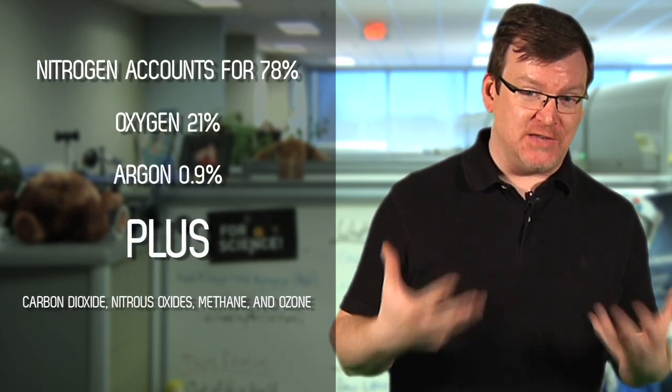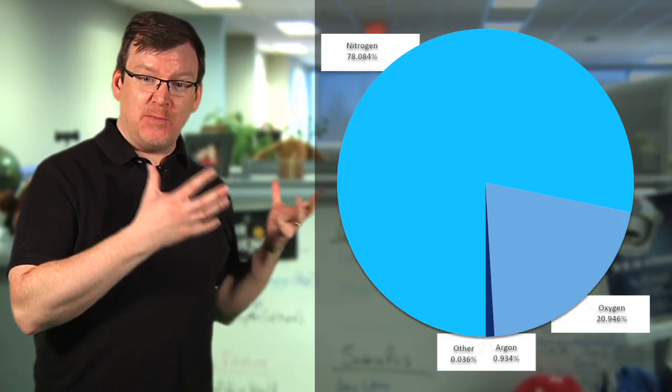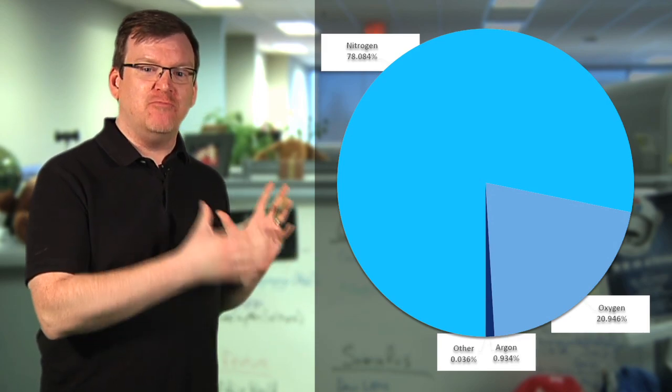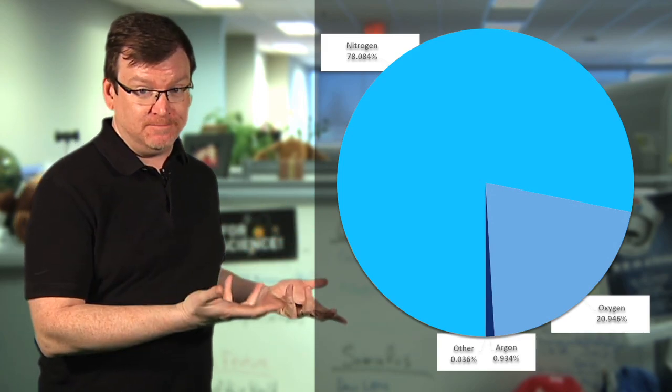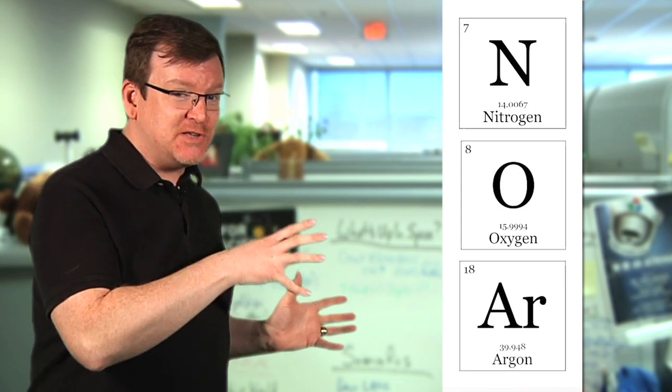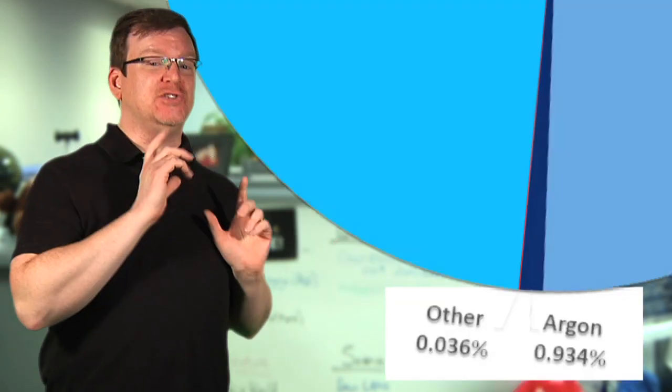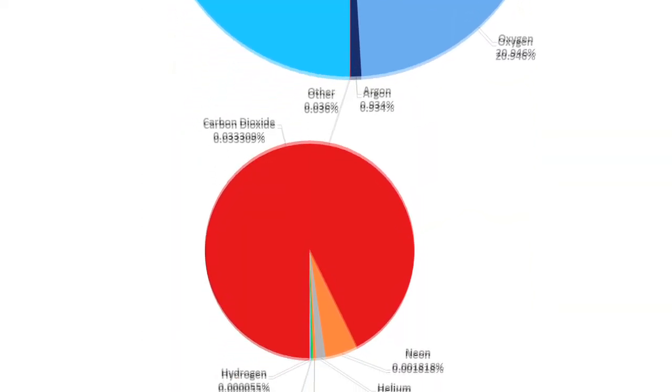Earth's atmosphere is a mixture of gases. Nitrogen and oxygen making up over 99% of the mix and most of the rest being taken up by a relatively inert gas called argon. Those three gases let both incoming sunlight and outgoing infrared radiation pass straight through them. It's the trace gases represented by this tiny sliver of the atmosphere's total makeup that gives it the ability to trap heat.